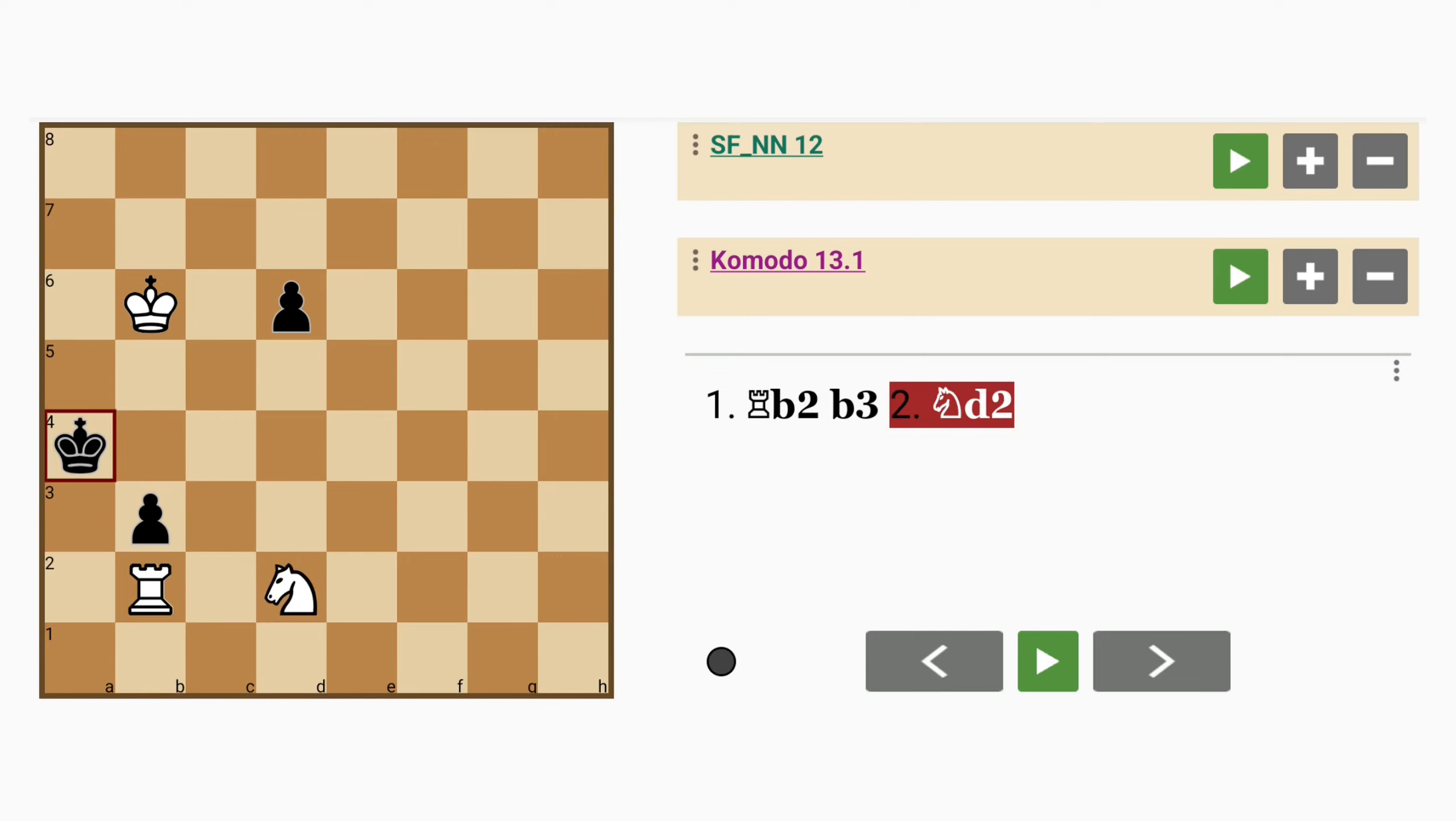Maybe knight to d2. King to b4, trying to escape. Rook captures pawn with check, the king has to move back to a4 because c4 is guarded.